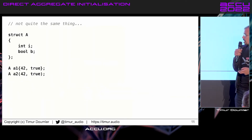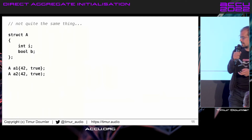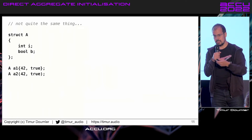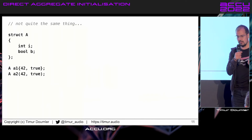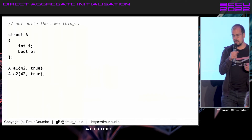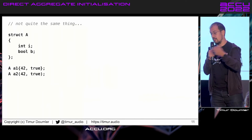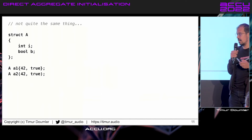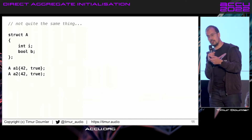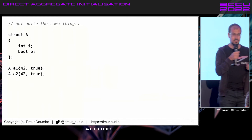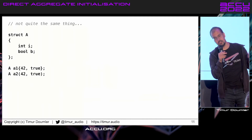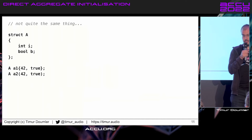So that's all great, and now it kind of looks like braces and parens are doing the same thing for aggregate initialization, but it turns out it's not quite the same because it's direct initialization — it's kind of like calling a constructor, which is kind of like calling a function — and that behaves a little bit differently from brace initialization. So there are a few differences.